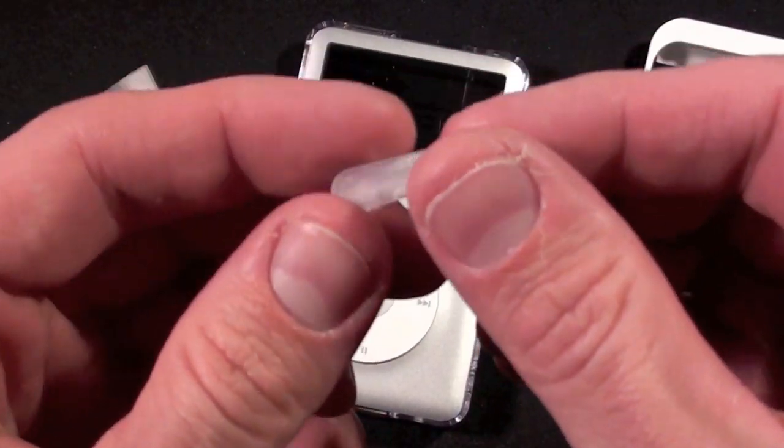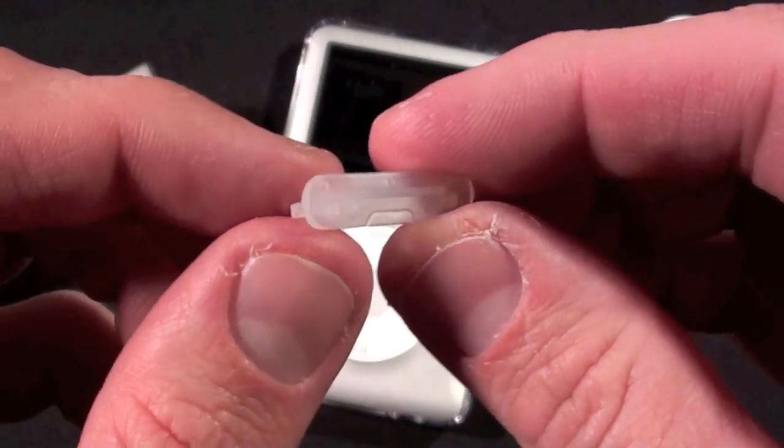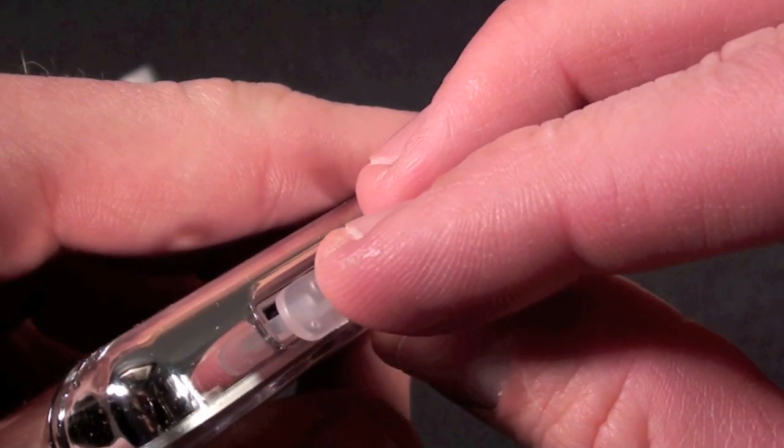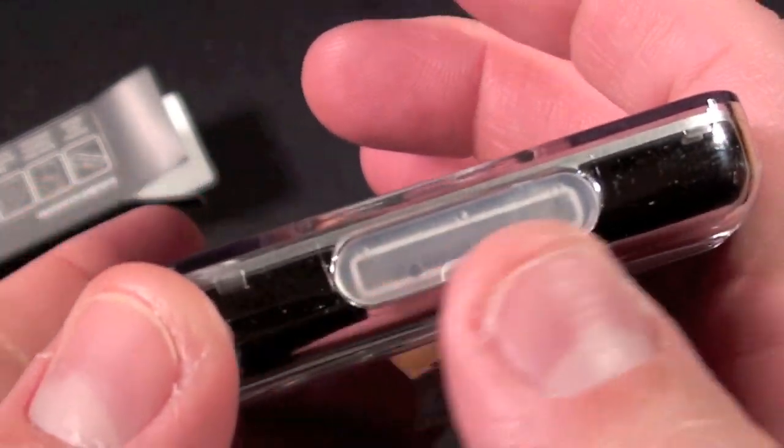We also have the dock connector protector, and this is actually a different material than what's used with the case, but it is a clear plastic. So if we put that on, it does a very good job sealing the dock from dust and moisture.